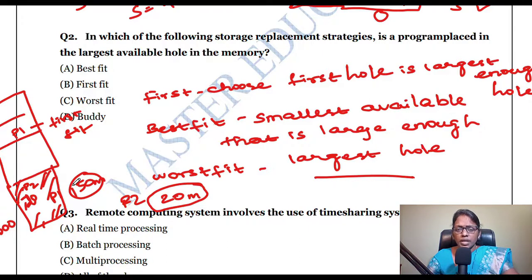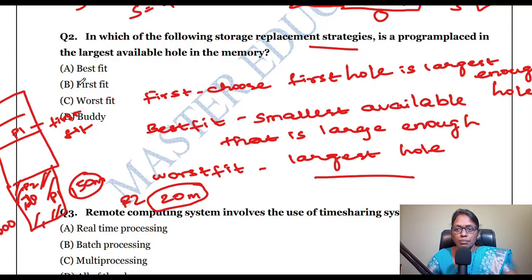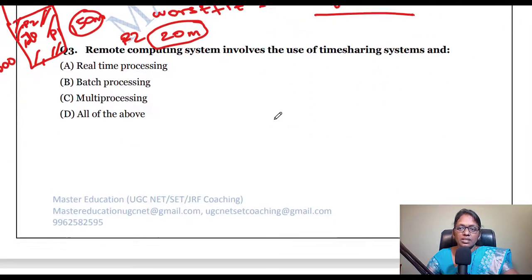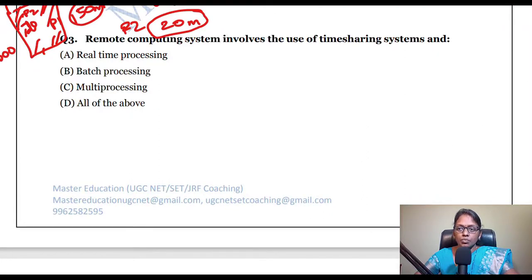Based on the application, different memory storage replacement strategies are used: best fit, first fit, and worst fit. The question asks which strategy places a program in the largest available hole — that is worst fit. Buddy system is an older memory management strategy that divides memory into two partitions.